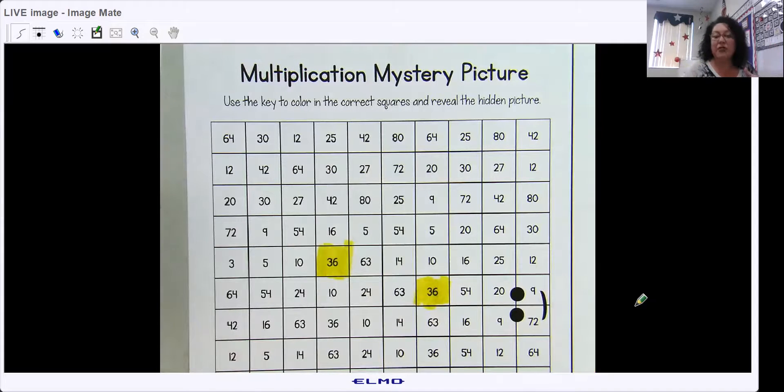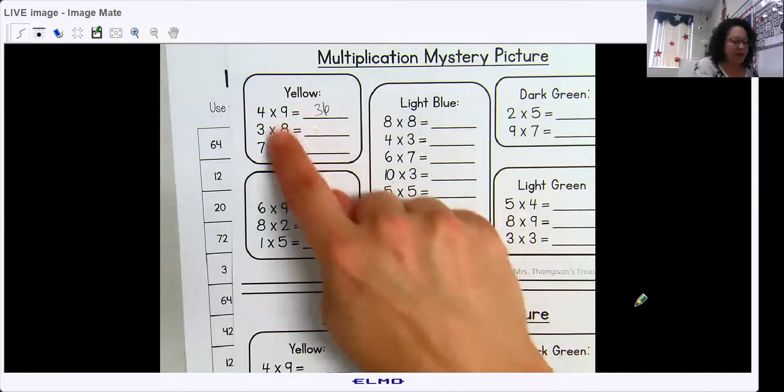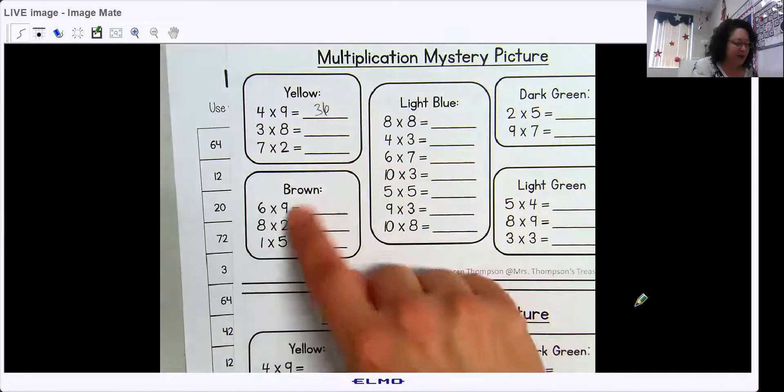So you can color as you go or you can solve all the problems and then color last, whichever works for you. We solve them all. These three answers get yellow. These three answers get brown. These answers get light blue.